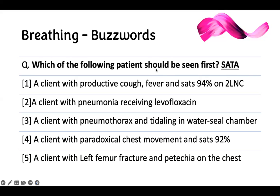Which of the following patients should be seen first? We have to see somebody first, so something is wrong. Looking at the first patient: a client with a productive cough, fever, and saturation of 94% on two liters.